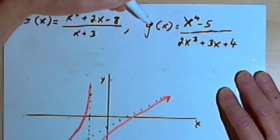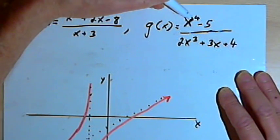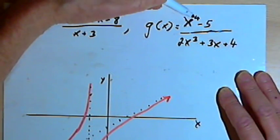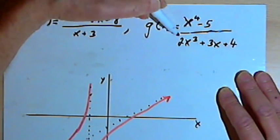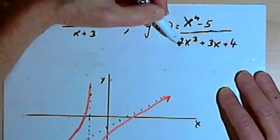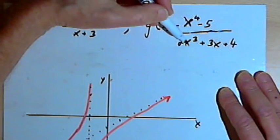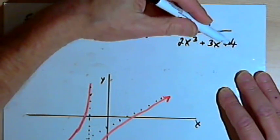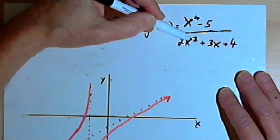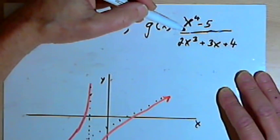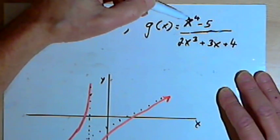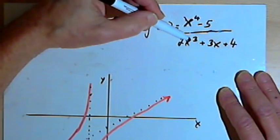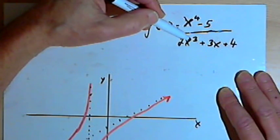Another example might be g equals x to the fourth minus 5, a fourth degree polynomial, over 2x to the third plus 3x plus 4, a third degree polynomial. Once again, the degree in the numerator is one greater than the degree in the denominator.